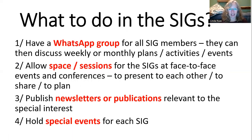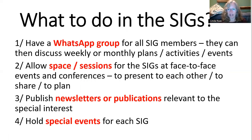So what to do in the SIGs? A good suggestion is to have a WhatsApp group for all the SIG members — they can discuss what they do, have weekly or monthly plans, run activities in the WhatsApp group, organise events or meetings outside the WhatsApp group, and share materials, ideas, and questions. You can also allow space or give sessions for the SIGs at face-to-face events and at conferences, where they can present ideas, share ideas, and have planning meetings.